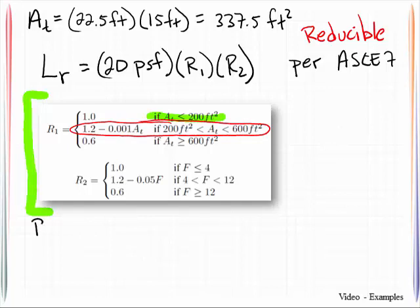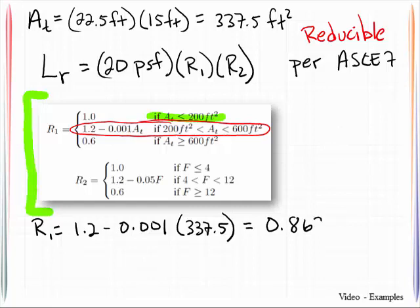In fact, let's go ahead and take care of that right now. R sub 1 then is 1.2 minus 0.001 times 337.5. And that will then compute out to be 0.8625.